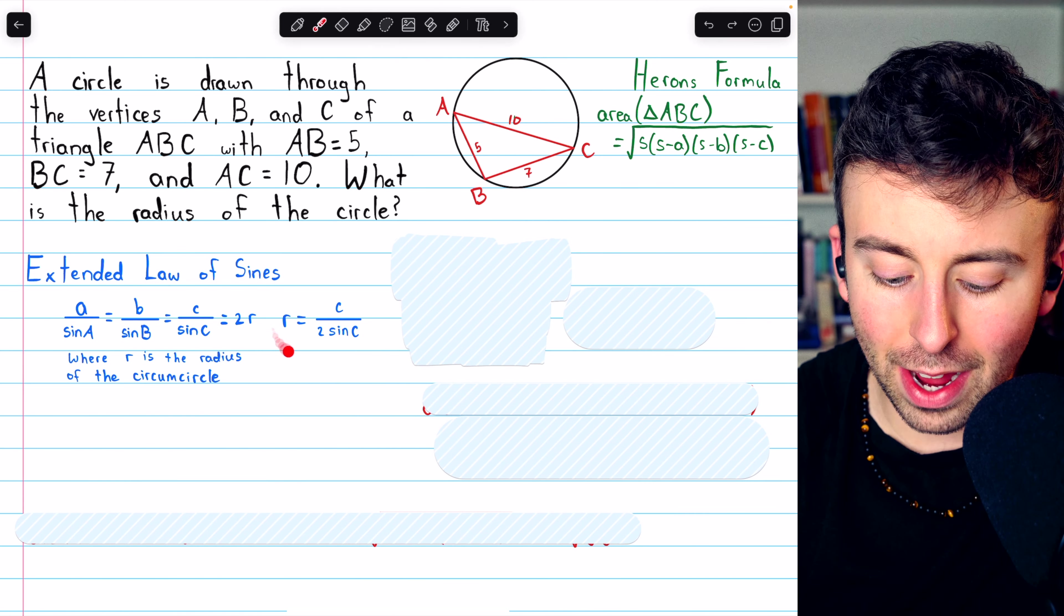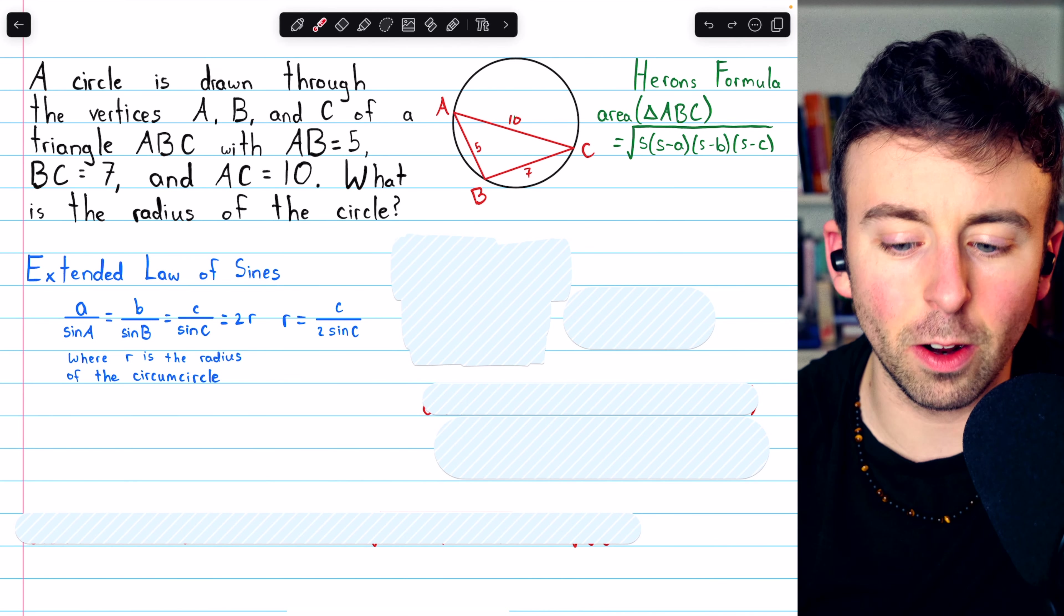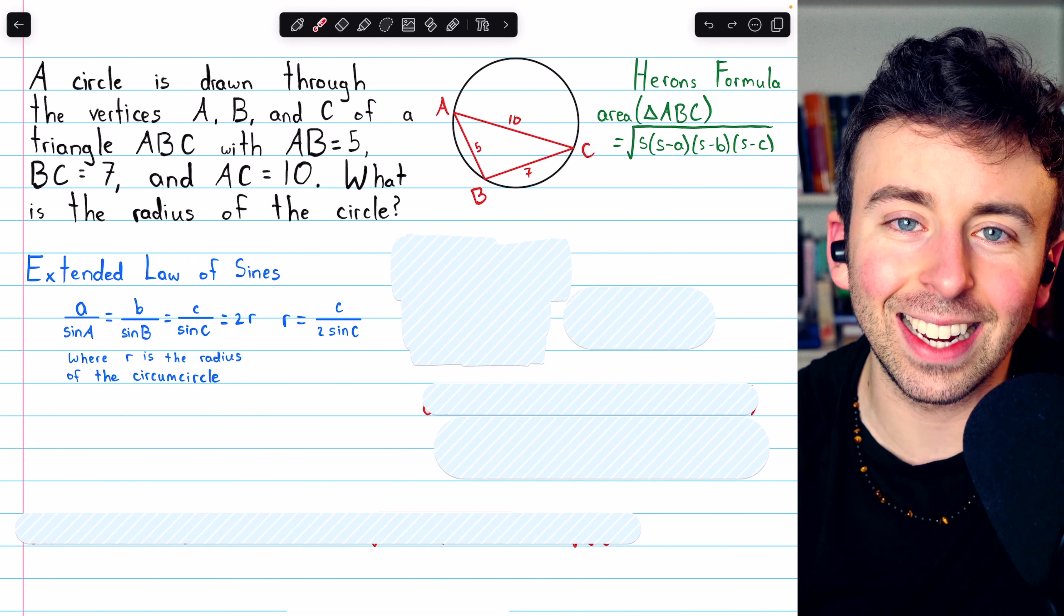So little c is this side opposite angle C. We can see that to find the radius we're looking for, we just need to find sine C. That's the only thing here that we don't know.